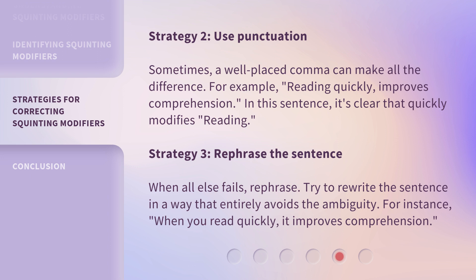Strategy 3 — Rephrase the sentence. When all else fails, rephrase. Try to rewrite the sentence in a way that entirely avoids the ambiguity. For instance, "When you read quickly, it improves comprehension."